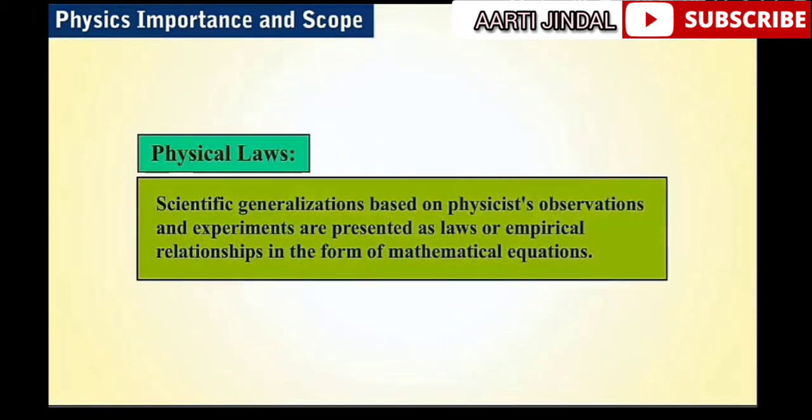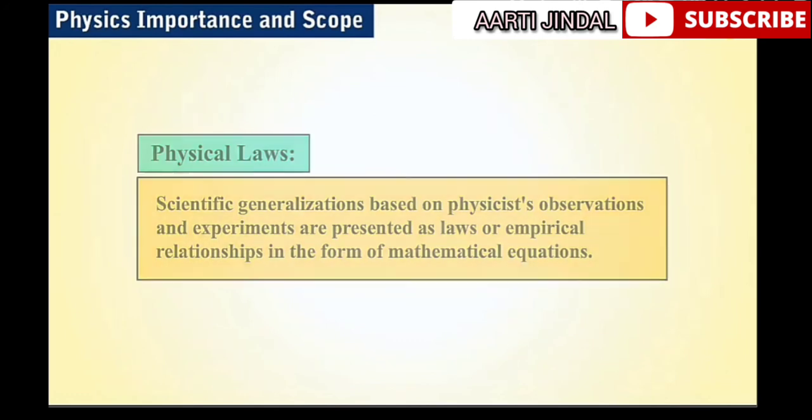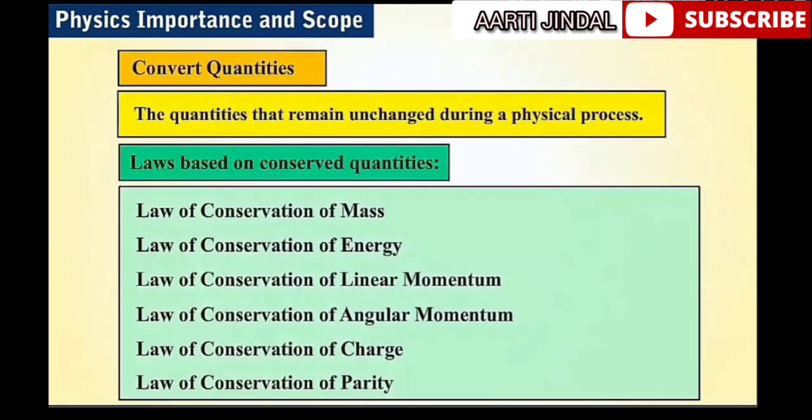Apart from finding the facts through observations and experiments, physicists always try to summarize these facts as laws or empirical relationships in the form of mathematical equations. These are known as physical laws. Most of these laws are based on some special quantities that remain unchanged in a process, which are known as conserved quantities.